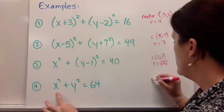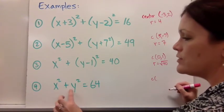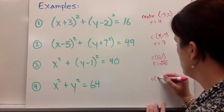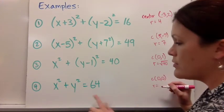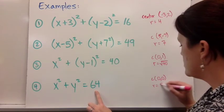And then for number four, the center point would be (0, 0) when it looks like this one. And your radius would be the square root of 64, which is just 8.